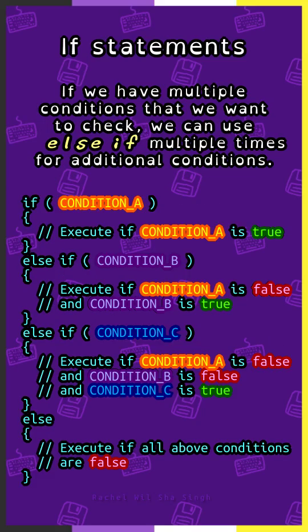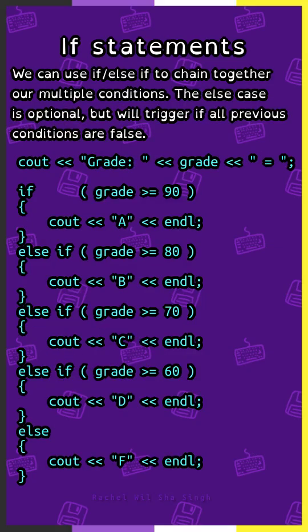If we have multiple conditions that we want to check, we can use else-if multiple times for additional conditions. The if and else-if statements all have conditions within parentheses; the else case does not. We can use if-else-if to chain together multiple conditions. The else case is optional, but will trigger if all previous conditions are false.